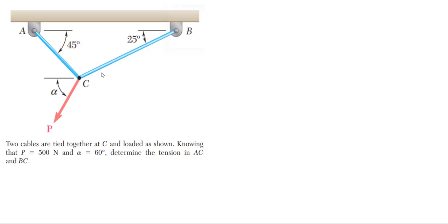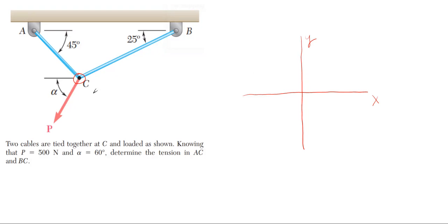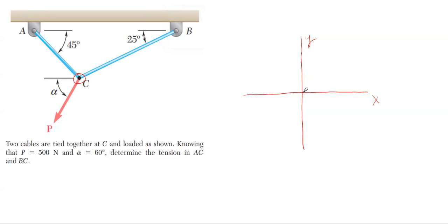This is an equilibrium problem, and like most equilibrium problems, the first thing you want to do is set up your free body diagram. I'm going to form an X and Y coordinate system and make point C my origin point, because that's where all the cables connect and where that force is acting on. Then I'm going to apply all my known forces acting on point C.